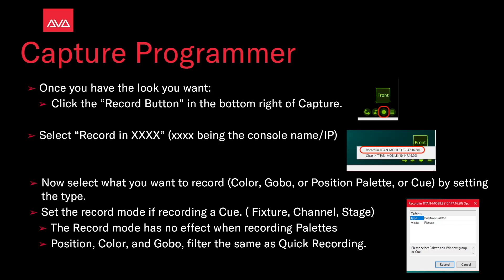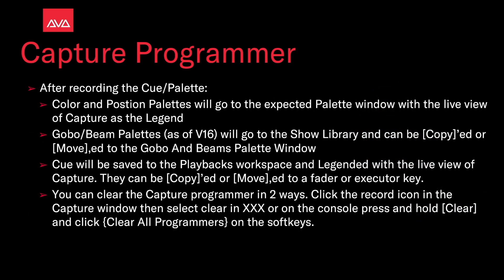Position, color, and gobo palettes will fill out the same as quick recording: colors only go in colors, positions only go in positions, and everything else goes in gobo and beams. After recording the cue or palette, the color and position palettes will go to the expected palette window with the live view of Capture as a legend. Gobo and Beam palettes, as of version 16, will go to the show library and can be copied or moved to the Gobo and Beam palette window. Cues will be saved to the Playbacks workspace, legended with the live view of Capture, and can also be copied or moved to a fader or executor key.